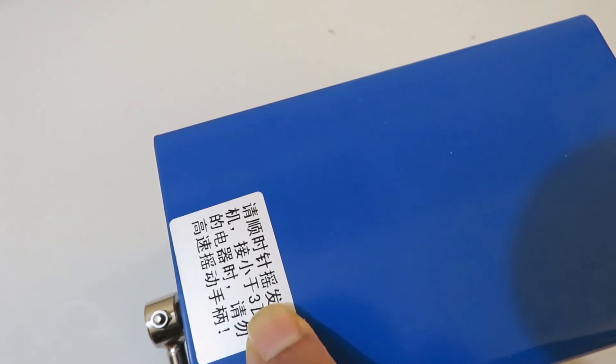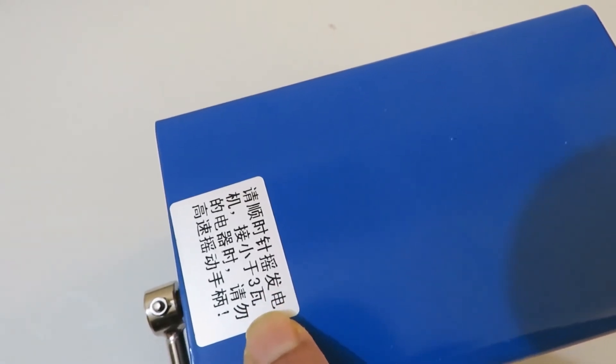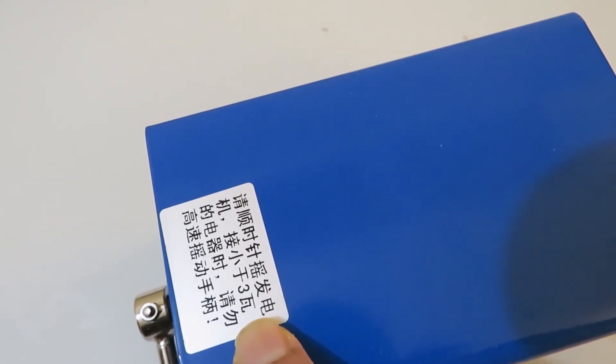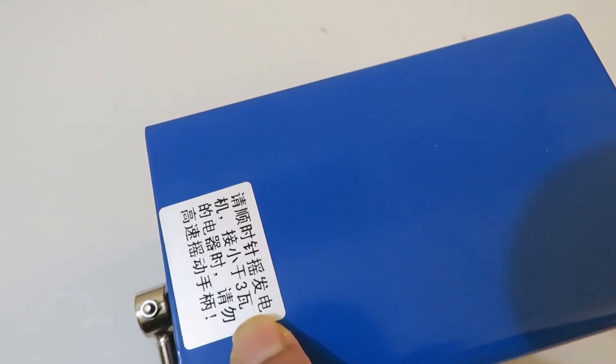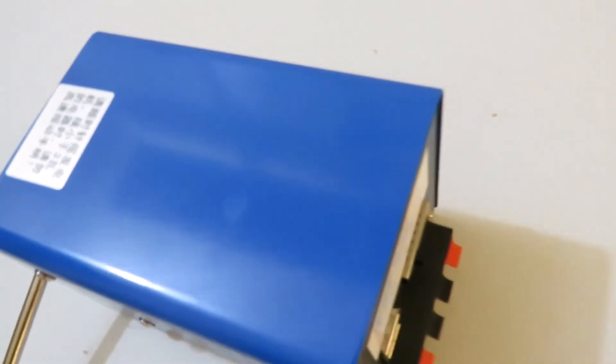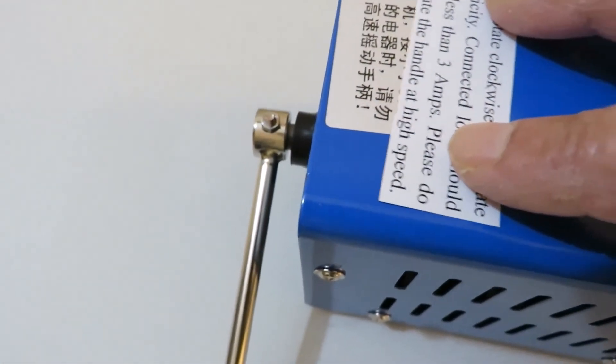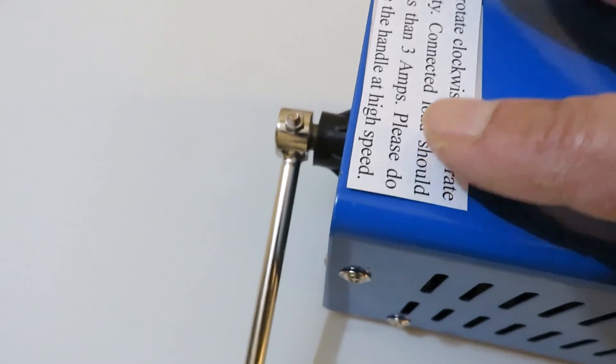The writing on the handle side tells: please rotate the handle clockwise to generate electricity, connected load should not draw more than 3 amps, please do not rotate the handle at high speed. There is also a label written in English on the front side or power connector side.